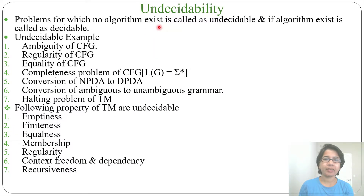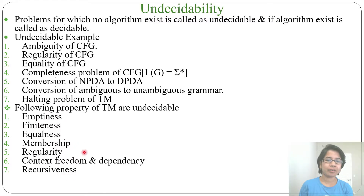In the previous lecture I discussed undecidability, where I covered some properties of Turing machines that are undecidable, like emptiness, finiteness, equalness, membership, regularity, context-freedom, dependency, recursiveness. These are non-trivial properties of Turing machines — for some Turing machines you may check emptiness, and for some you may not.